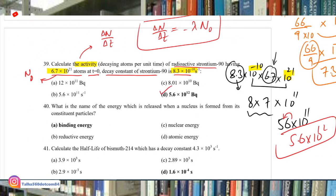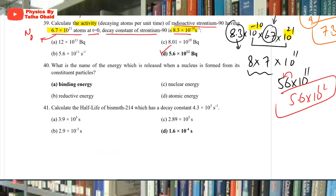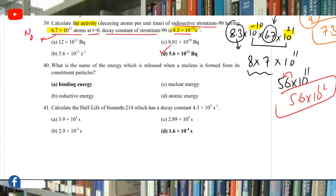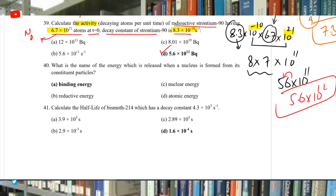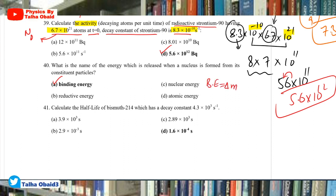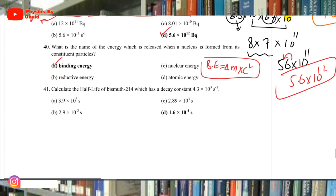Question 40: The energy released when a nucleus is formed from its constituent particles — when separate nucleons combine to form a nucleus, their mass decreases (mass defect). This mass is released as energy, called binding energy. The same energy must be supplied again to break the nucleus back into its constituent nucleons.